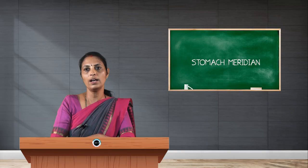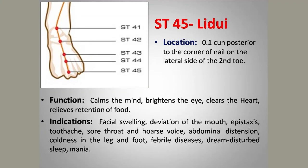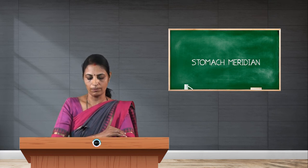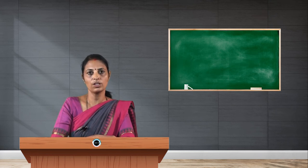Stomach 45, Lidui, is the last point of the meridian, located 0.1 cun proximal to the corner of the nail at the lateral aspect of the second toe. It is used as a jing-well point and can be used during any syncopal attack, cadenas, or fainting. Thank you.